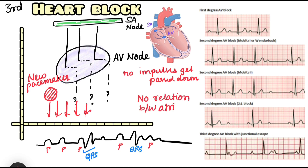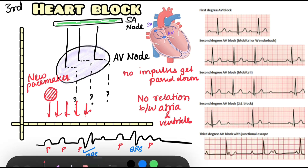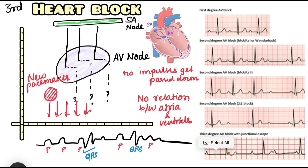In a setting of second degree heart block, if you increase the degree of block further, you lead to a third degree heart block. In the case of third degree heart block, as no impulse is getting propagated, this is also known as a complete heart block.